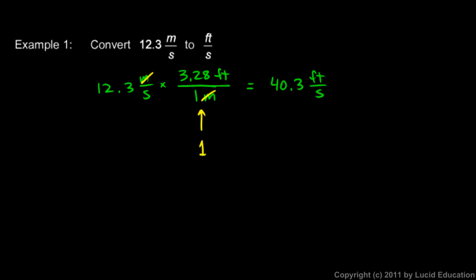So 40.3 feet per second is the same speed as 12.3 meters per second. But by setting up my fraction this way, I've caused certain units to cancel out and certain units to remain, such that the units are changed into what I needed them to be. In this case, I was told to make them into feet per second, and that's what I have.